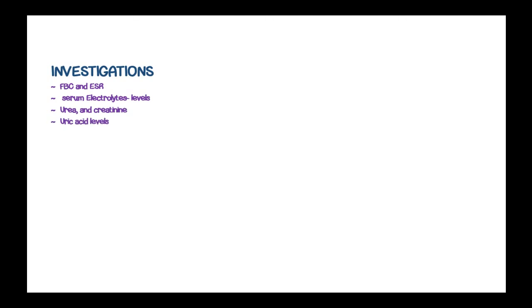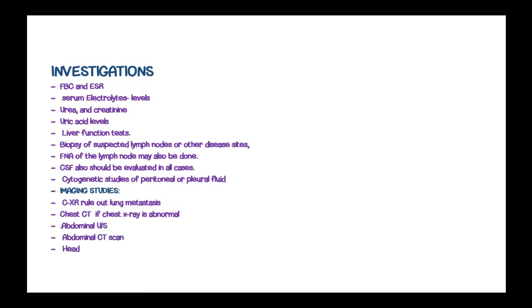Investigations include a full blood count and erythrocyte sedimentation rate, serum electrolyte levels, urea and creatinine levels, uric acid levels, liver function tests, and biopsies of suspected lymph nodes and other disease sites. Fine needle aspiration of lymph nodes may also be done. CSF should be evaluated in all cases of Burkitt lymphoma. Cytogenetic studies, chest X-ray to rule out metastasis, chest CT scan if the chest X-ray is abnormal, abdominal ultrasound, abdominal CT scan, head-to-spine CT scan or MRI, bone scan, and plain bone radiographs should also be performed.